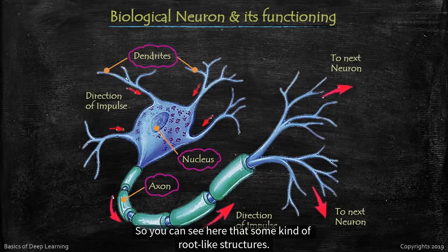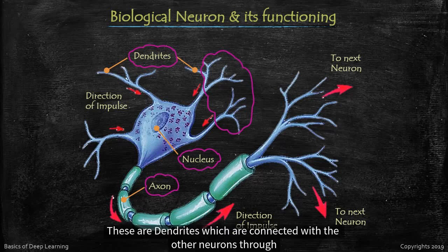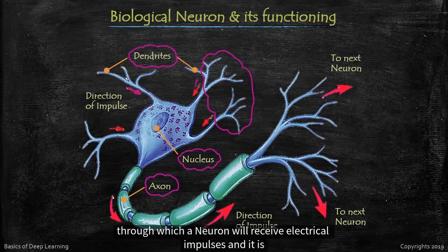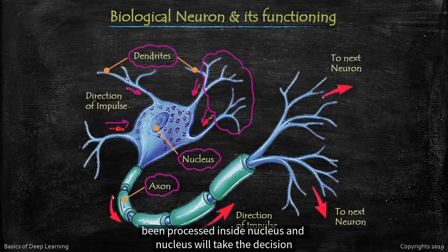So you can see here there are some kind of root-like structures, these are dendrites which are connected with the other neurons through which we receive electrical impulses. In the nucleus, I have just marked some arrows here, you can see through which a neuron will receive electrical impulses and it has been processed inside nucleus.